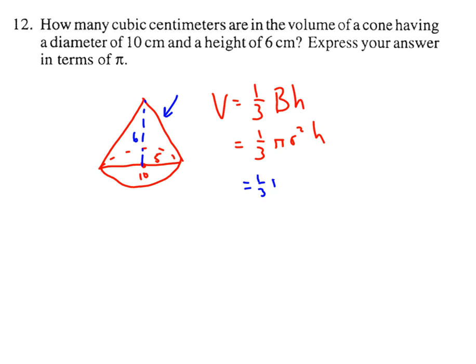You get one-third pi. The radius is 5, so you've got 25. The height is 6. One-third times 6 is 2, and 25 times 2 is 50. So it's 50 pi. It's a very easy problem as long as you know these formulas.